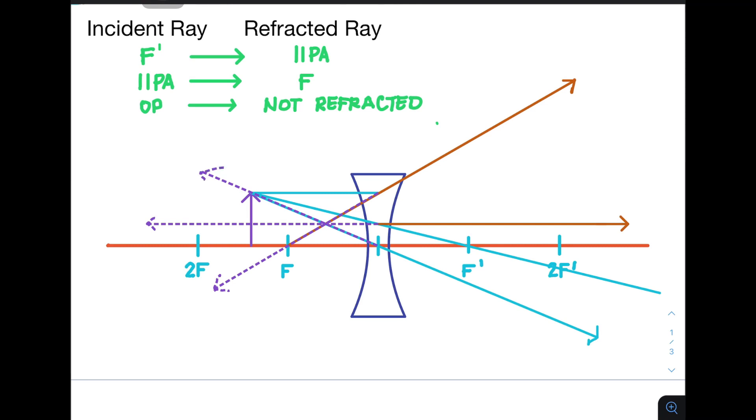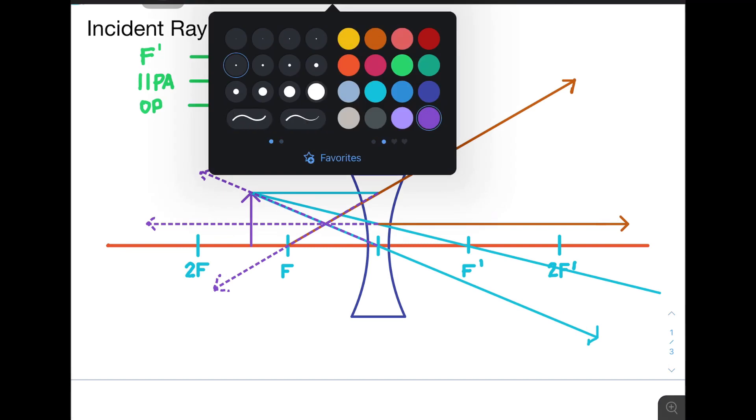And finally, we have a line which is passing through the optical center and not refracting. Now, notice that there is, again, an intersection between the three virtual rays. So what does it mean?